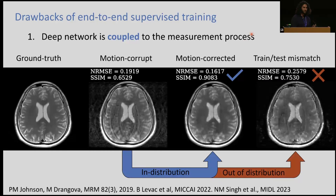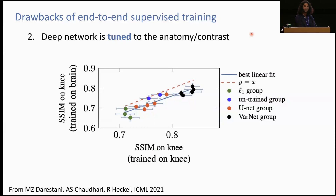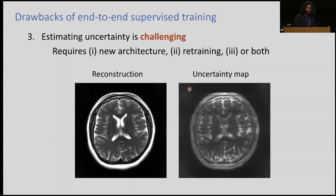Maybe we can take these networks and improve them with some data. The issue is that these networks are very big — tuned to particular anatomy, contrast, sequence, etc. If I train on knee and test on knee, I get a certain performance. But if I train on brain and test on knee, there's a drop in performance. It's particularly challenging when we have so many parameters in the network to adapt it to a new task. Another drawback is that estimating uncertainty is challenging. I'm quite surprised we haven't heard a lot about uncertainty in this workshop, because when we apply these models we really want to know that what we're getting is reliable. End-to-end supervised training is not really designed for uncertainty; you can retrofit it, but it's not built in.